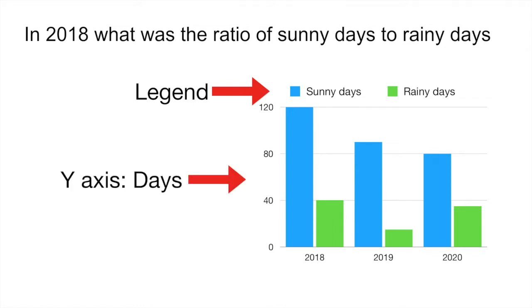Usually the legend is actually found in the top right of the graph, but in this case, I put it up here. And it's telling you that the blue bars on the graph represent sunny days, and the green bars represent rainy days. Then you're going to look at your y-axis, which represents number of days. So you can see that it goes from 0 days to 40, 80 days, and 120 days. And finally, you're going to look at your x-axis, which is the horizontal axis, which represents the number of years. So essentially, this graph is showing you how many sunny days and rainy days they had in the year 2018, in the year 2019, and the year 2020.